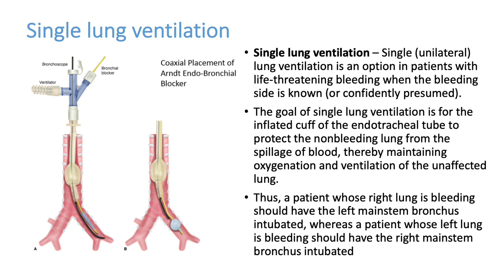Single lung ventilation is mainly used to prevent aspiration to the opposite lung. If the patient is fully stable with a good GCS, ventilation may not be required and normal ABC support can be given in the emergency room. If there is airway compromise, mechanical ventilation is needed; NIV is not an option as it can cause problems. Single lung ventilation is ideal but may not be available in most centers.